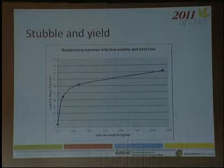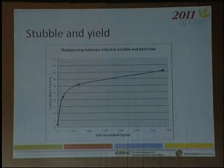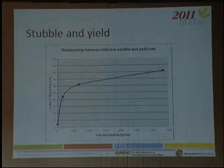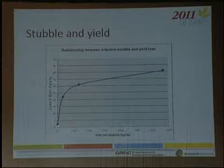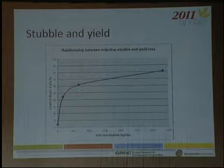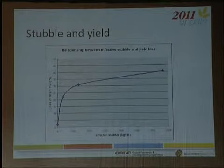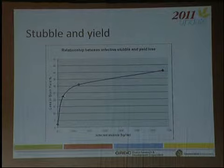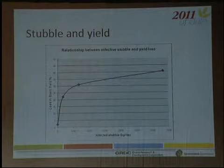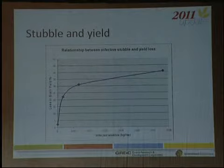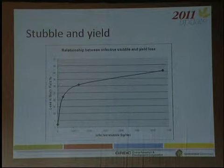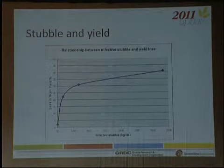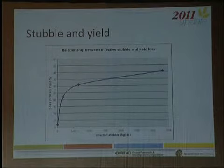This chart demonstrates the importance of stubble load and yield loss from yellow spot — work we did about 30 years ago. We applied infected stubble to yield plots at zero, 170 kg/ha, 680 kg/ha, and up to about 3.3 t/ha. Yield loss was almost proportional to stubble amount: 22% loss at only 170 kg/ha of infected stubble. Where there was less than a tonne per hectare, over 30% yield loss; and above that, over 40%. This was conducted under sprinkler irrigation to promote epidemics, showing the potential loss in a susceptible variety — in this case, Banks.